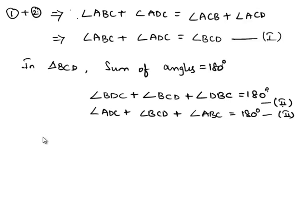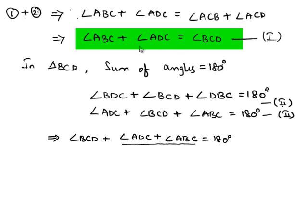This can be written as angle BCD plus angle ADC plus angle ABC is equal to 180 degrees. Here we have angle ADC plus angle ABC is equal to angle BCD from the first equation. Let us substitute that.